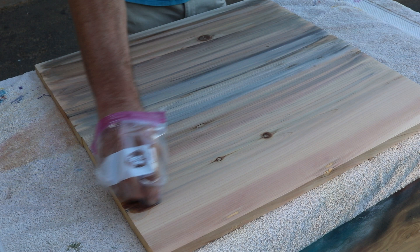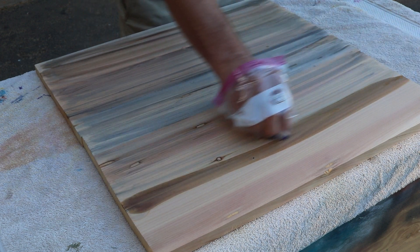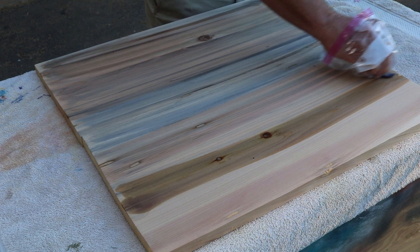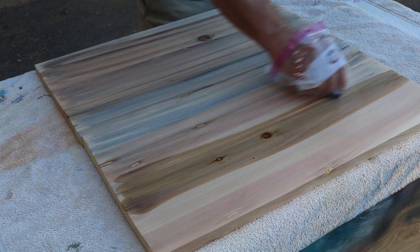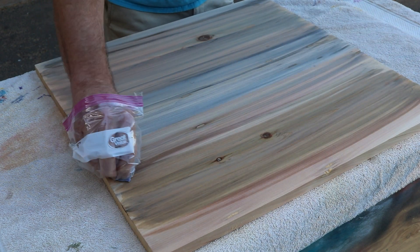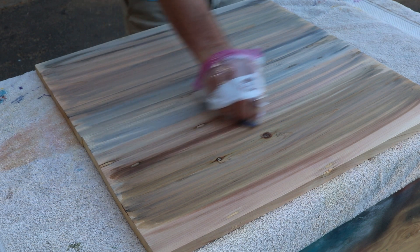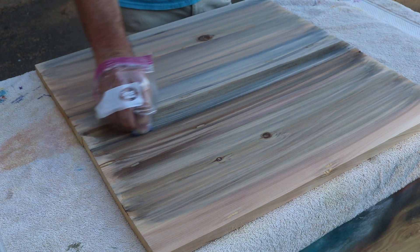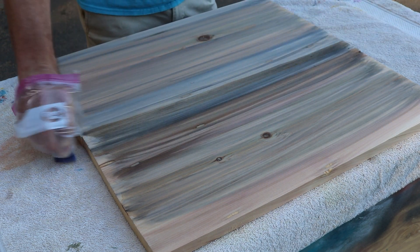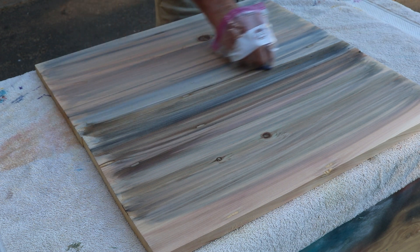I mixed my dye with isopropyl alcohol. It makes it really easy to blend and it evaporates quick too, which is nice. I'm going to put a couple coats on here to get it nice and dark, and I'm intentionally not blending it too carefully. I want it to be a little streaky.